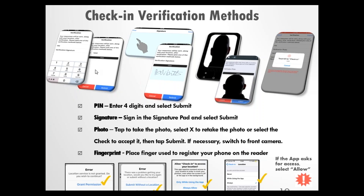The verification methods — there are four. There's a PIN number similar to an ATM: enter four digits and tap submit. There's a signature: just sign on the keypad and tap submit. And then there's a photo: when you take the photo, if you don't like it, tap X to retake it. On the other side there's a check mark — if you like the photo, tap submit to accept and submit it.